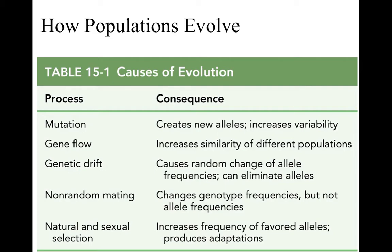The five major causes of evolution are: mutation, which creates new alleles and changes variability instantaneously; gene flow, which brings genes into or out of a population; genetic drift, a random change in allelic frequencies to which small populations are more susceptible; non-random mating, which includes mate choice, mate selection, and mating rituals that can change genotypic and sometimes allelic frequencies; and natural and sexual selection, which increases the frequency of favored alleles and produces adaptations like larger horns on rams over time.